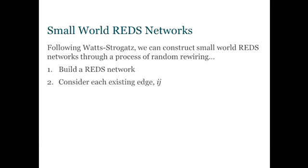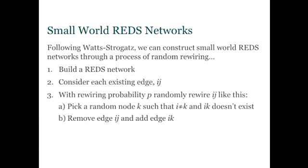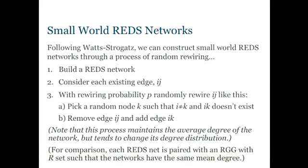So the first thing we can do is show that you can easily build small worlds on these graphs. We just follow the same kind of random rewiring process that Watts-Strogatz introduced. So we build a complete REDS network, then we consider each edge, and with probability P, we rewire it, and we do that by picking another random node, we make sure that it's not I, one of the nodes in our edge, and we make sure that the edge between I and K doesn't already exist, and then we remove the edge that we're rewiring, and we add in a new edge, and we gradually erode the structure in the network as we increase P.